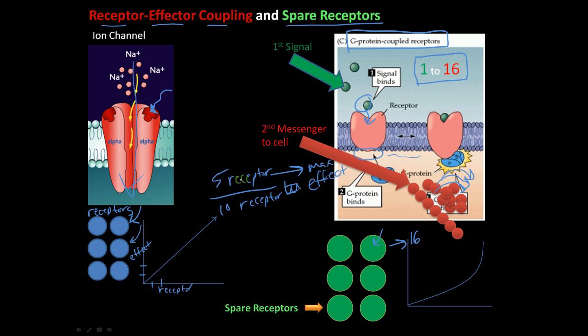So I only need to activate 1, 2, 3, 4, 5. When I activate 5 receptors, that will lead to max effect. So why is there this extra receptor here?